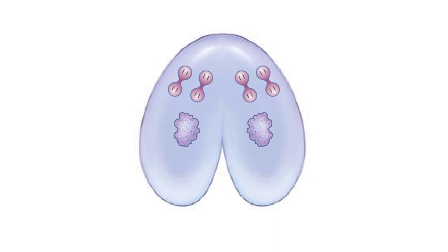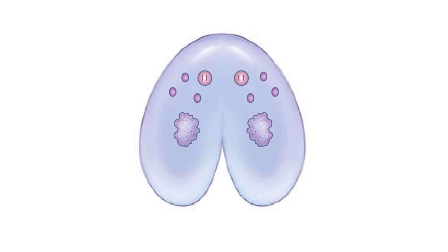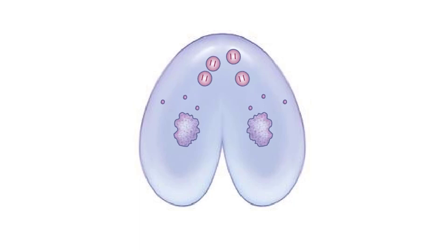In each cell, one haploid micronucleus remains intact. The other three degenerate. The remaining haploid micronuclei divide, and each cell swaps one daughter micronucleus with its partner.